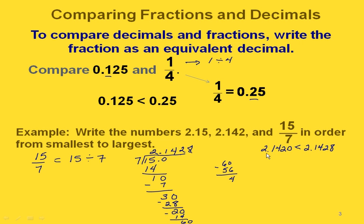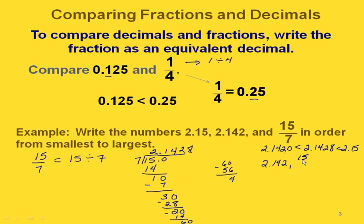Comparing 2 and 142 thousandths with the decimal equivalent of 15 sevenths, and then comparing with 2 and 15 hundredths: 2 and 15 hundredths is the largest. So the order from smallest to largest is: 2 and 142 thousandths, then 15 sevenths, then 2 and 15 hundredths.